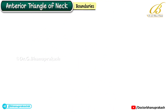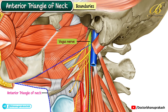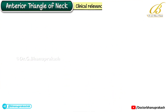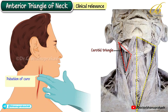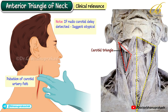The nerves include the vagus nerve and hypoglossal nerve. Regarding clinical relevance, the pulsation of the carotid artery can be felt in the carotid triangle, a subdivision of the anterior triangle. A radio-carotid delay detected here may suggest an atypical coarctation of the aorta.